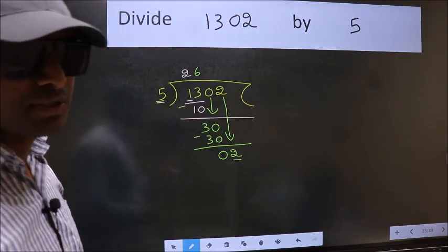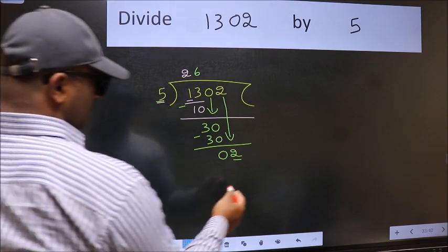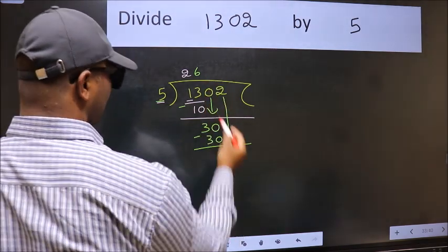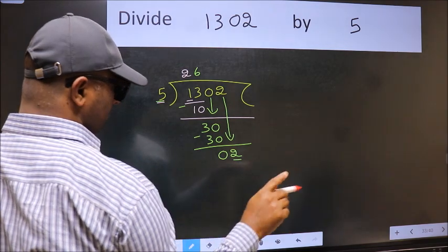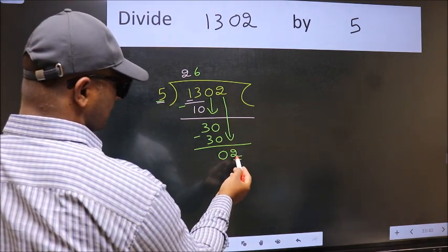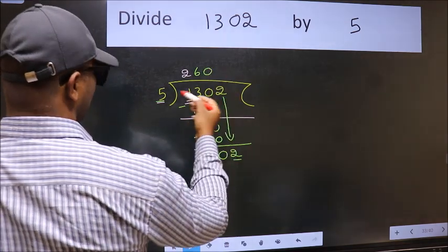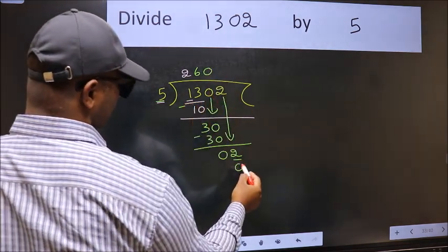Instead of that, what you should think of doing is which number should we take here? If I take 1, we will get 5, but 5 is larger than 2. So what we should do is we should take 0. So 5 into 0 is 0.